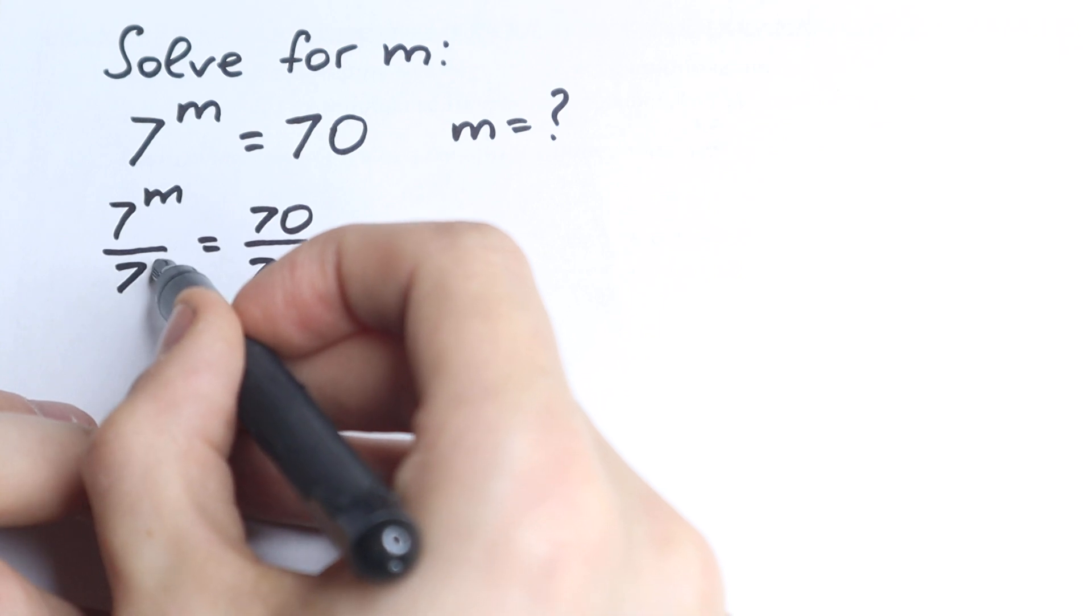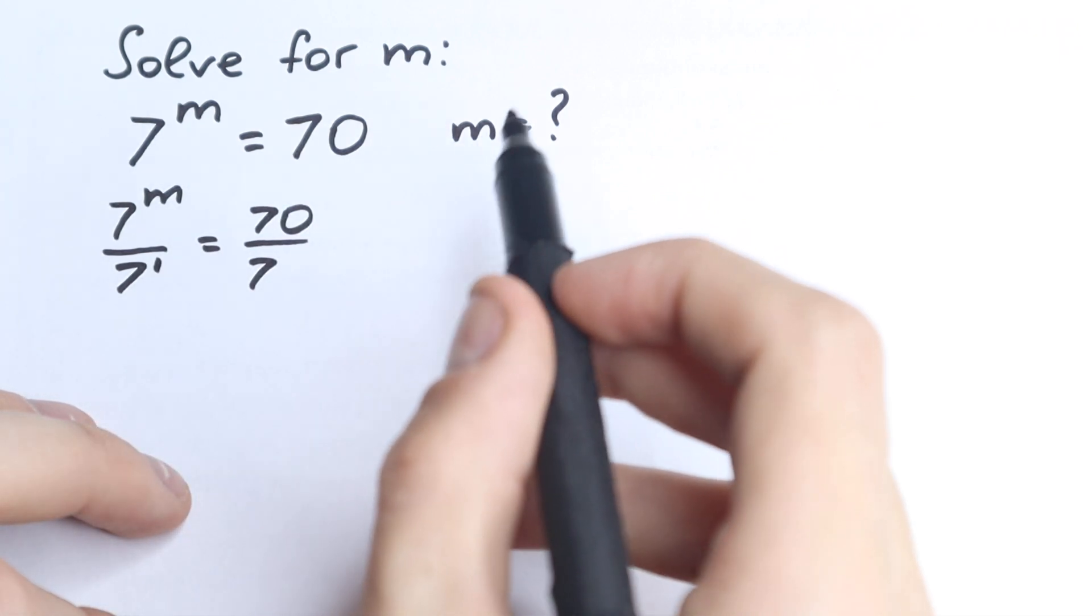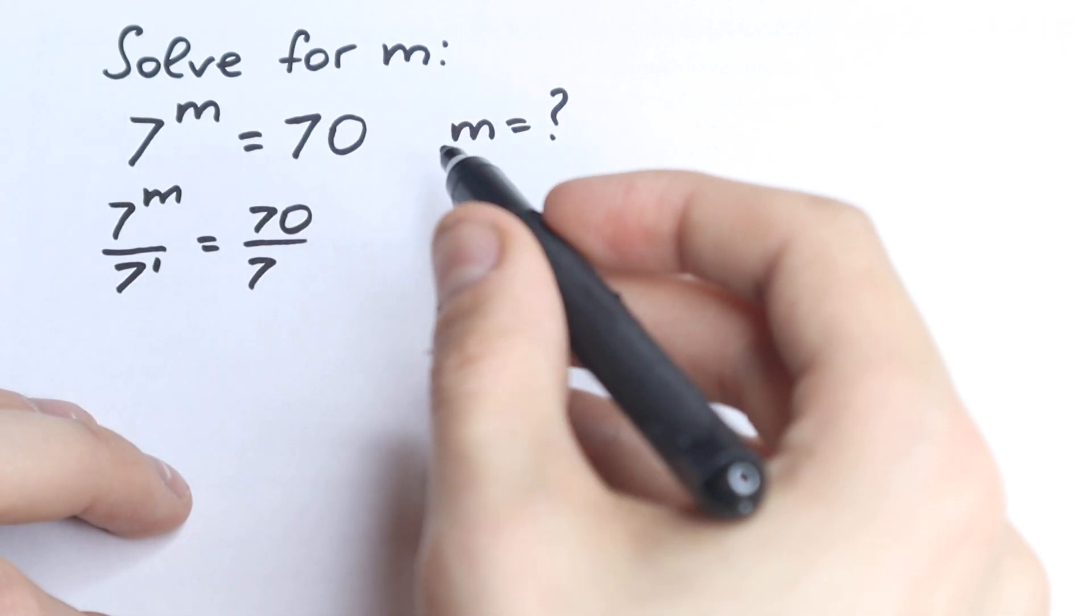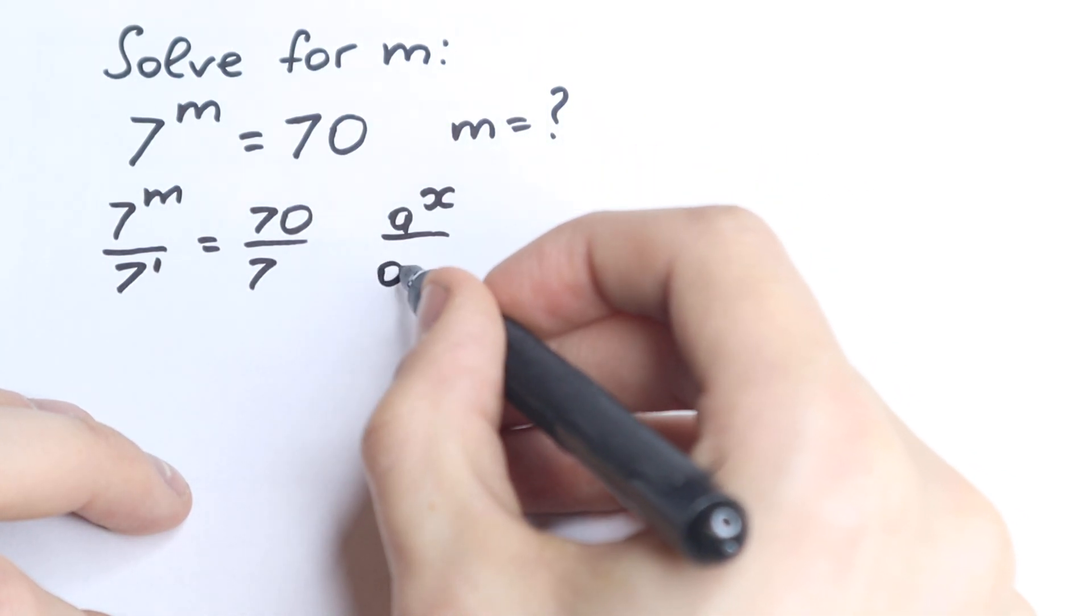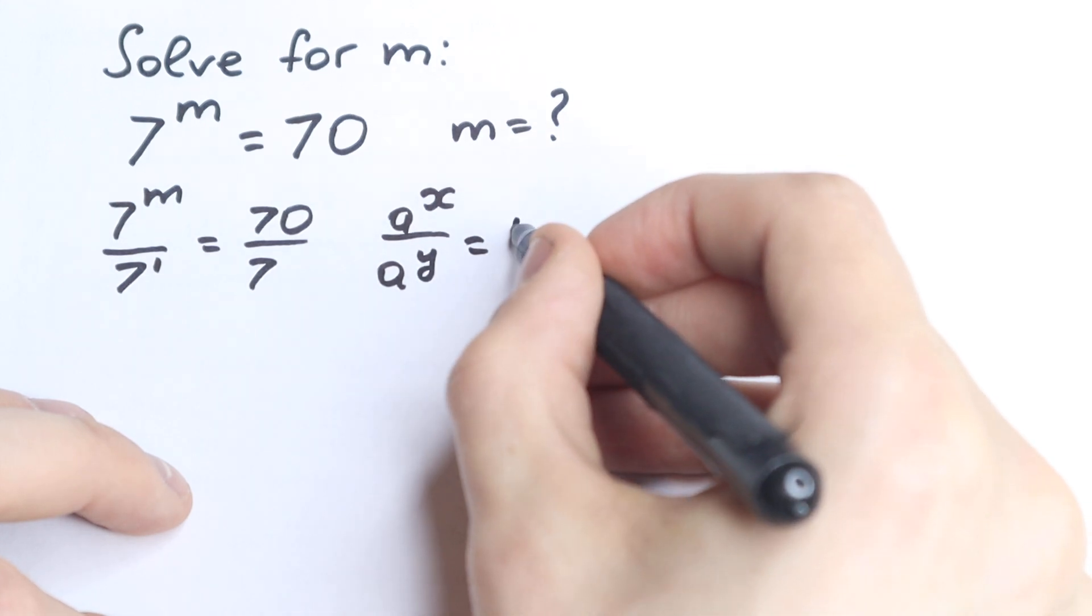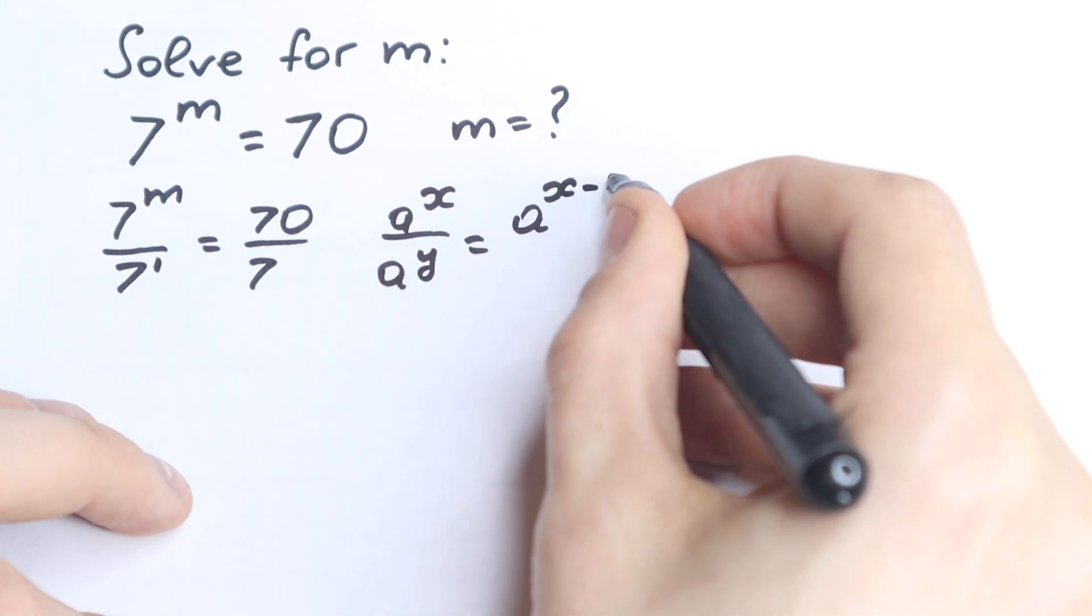And right here, this is 7 to the power 1. And if we know a little bit about the rules, if we have a^x over a^y, it is equal to a to the power x minus y.